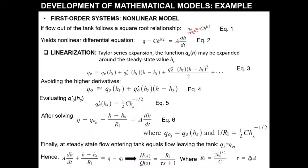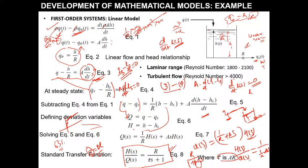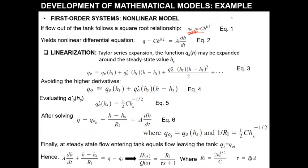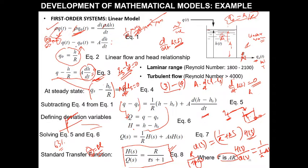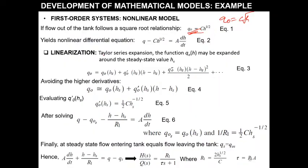For a nonlinear valve, Q_naught passes through the valve such that Q_naught equals C·H^(1/2), i.e., root H. The mass balance equation then becomes Q minus C·H^(1/2) equals A·dH/dt. Since this is nonlinear, we need to linearize it to find the transfer function of the linear model.